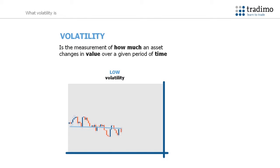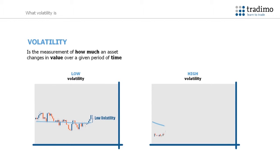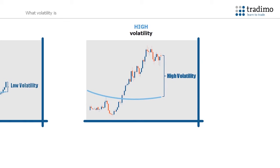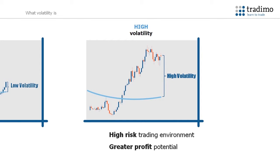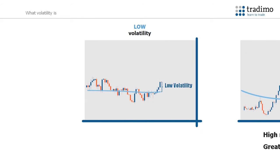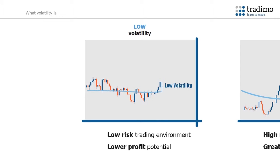Volatility is the measurement of how much an asset changes in value over a given period of time. The more its value changes, the higher its volatility. If the price of an asset has a high volatility, there is more risk associated with trading it, but greater potential for profits. If an asset has a low volatility, there is a lower risk trading it, but less profit potential.